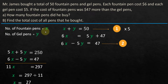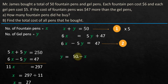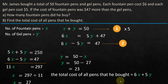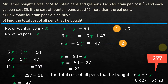So x equals 27 is the number of fountain pens — that answers the first question. For the total cost of all pens, y equals 50 minus x, which is 50 minus 27, giving y equals 23 — the number of gel pens. The total cost of all pens is 6x plus 5y, which equals 6 times 27 plus 5 times 23, giving $277. Hope this was helpful. Thank you. Have a great day. Bye.